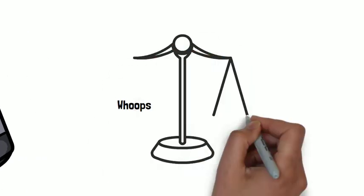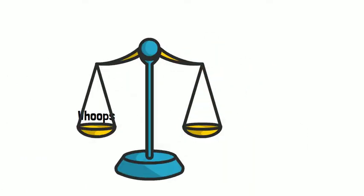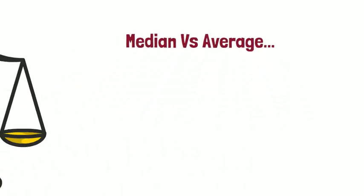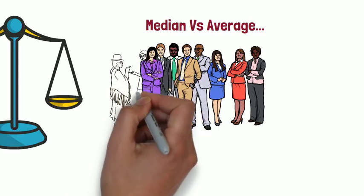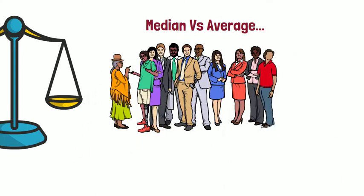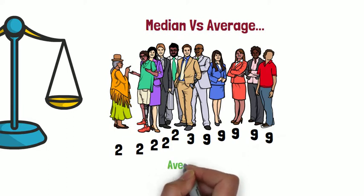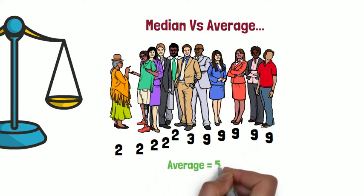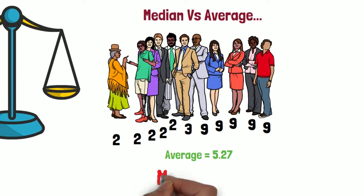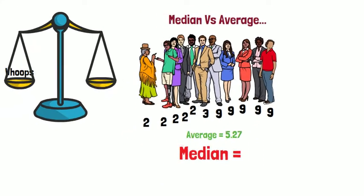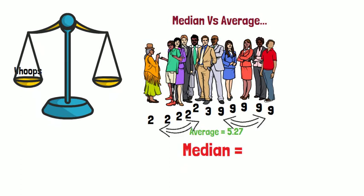Before I go into the numbers, I have to explain a metric I'll be using, which is known as the median. If you know the difference between a median and an average, feel free to skip the next 40 seconds. Say there are 11 people: five of them are earning two dollars, one is earning three dollars, and five have nine dollars. The average is five dollars twenty-seven, but the median is when you line up all 11 people and find the middle individual — five people earning more and five earning less. In this example, that person is the one earning three dollars.